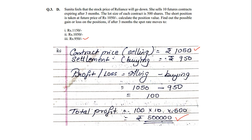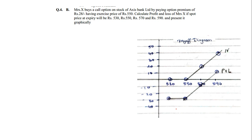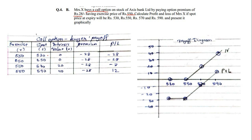Now the last question in this paper: Mrs. X buys a call option on the stock of Access Bank Limited, paying an option premium of 28. So the premium given is 28, you are buying a call option, the exercise price is 550, and spot prices have been given at varied levels. They are also asking you to represent it in a graphical method.